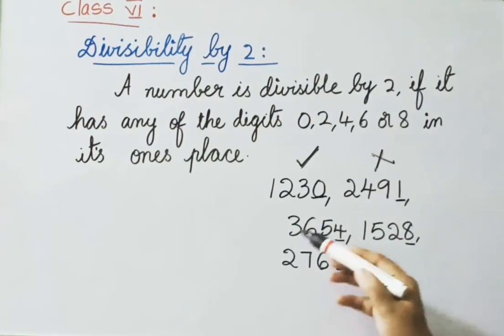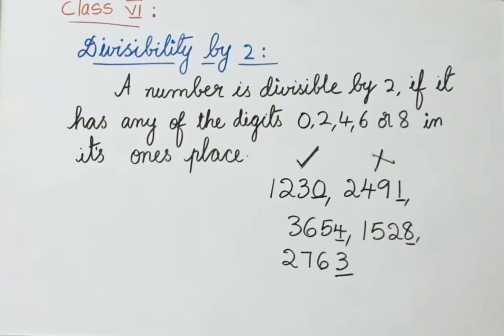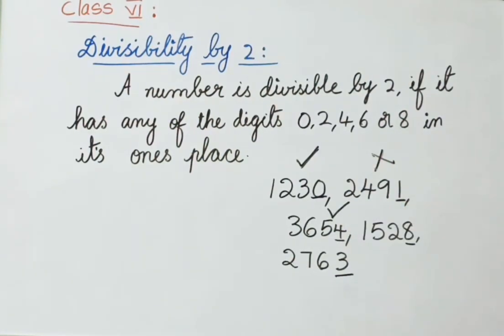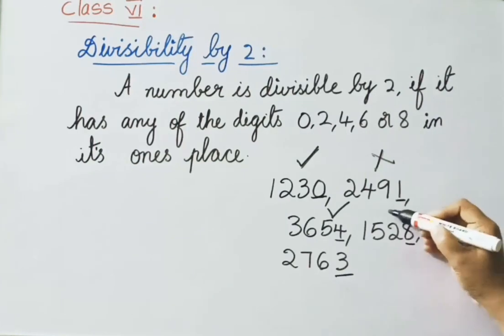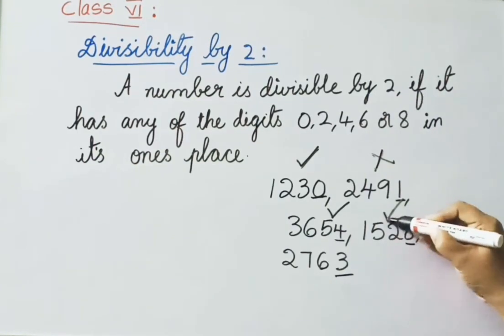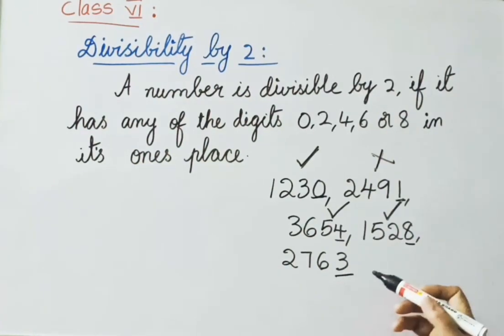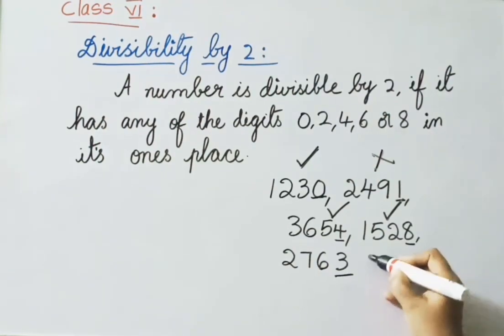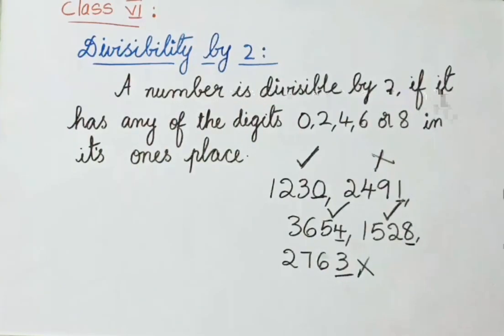The number 3654 has 4 in ones place, so it is divisible by 2. The number 1528 has 8 in ones place, so it is also divisible by 2. The number 2763 has 3 in ones place, so it is not divisible by 2. So you all understand divisibility by 2 now.